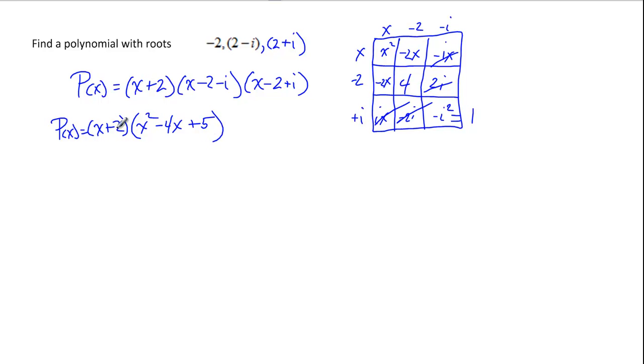But we're not done yet because we also have this guy here to multiply through. And you don't have to build a box to do that one. You don't need the organizational tool. Remember, you could just take the x, distribute it through, giving you x to the third, minus 4x squared, plus 5x. Then we distribute the 2. So that would be plus 2x squared minus 8x plus 10. And then we combine like terms and we'll have our polynomial.